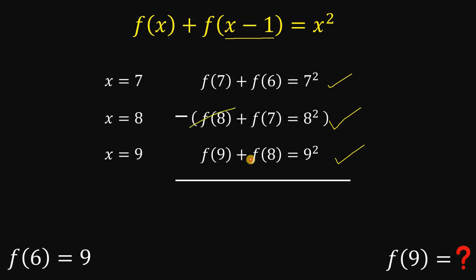we eliminate negative f(8) and positive f(8), negative f(7) and positive f(7). Now what's left is f(9) + f(6) = 7² - 8² + 9².